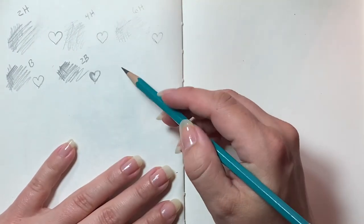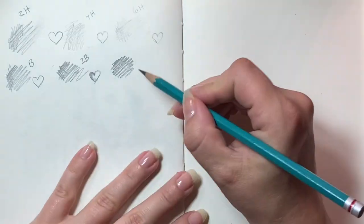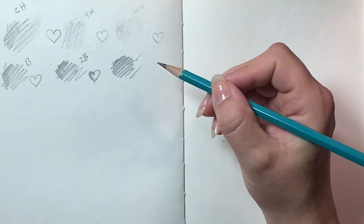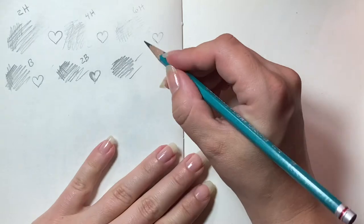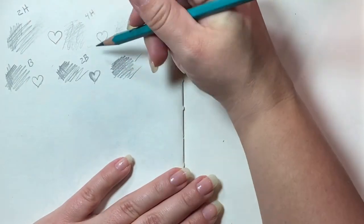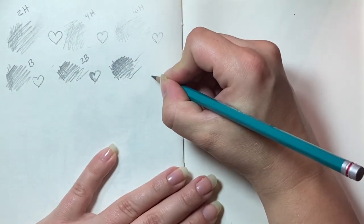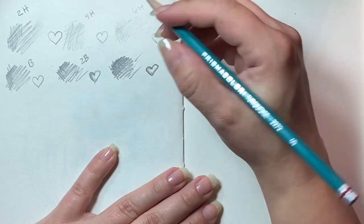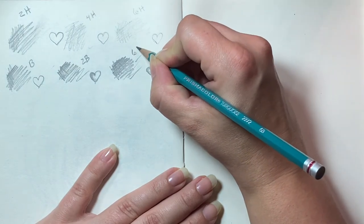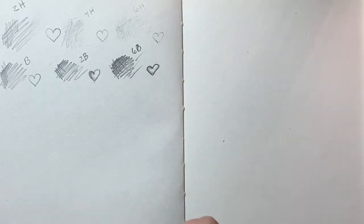This one is 6B. See, see it doesn't even really want to make a crisp line. You can if you color on the or if you mark with the sharpened tip but if you kind of put it on the side it almost mimics a colored pencil and that it doesn't really want to make a sharp crisp line. These are made for shading and filling in. So this is 6B.